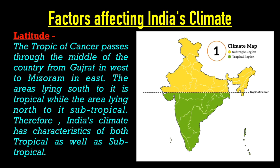Now, the Factors Affecting India's Climate. First factor is Latitude. The Tropic of Cancer, at 23.5 degrees north latitude, passes through the middle of the country from Gujarat in the west to Mizoram in the east. It passes through eight states: Gujarat, Rajasthan, Madhya Pradesh, Chhattisgarh, Jharkhand, West Bengal, Tripura, and Mizoram. Areas lying south of it are tropical while areas lying north of it are subtropical. Therefore, India's climate has characteristics of both tropical and subtropical climate.